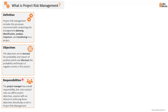When it comes to responsibilities in project risk management, the project manager has the overall responsibility. But since project risks can affect any project objective — like the schedule, budget, or quality — anyone with an interest in achieving those objectives should play a role. All stakeholders and all project team members should share the accountability and responsibility of project risk management. However, at the end, it is the overall responsibility of the project manager.